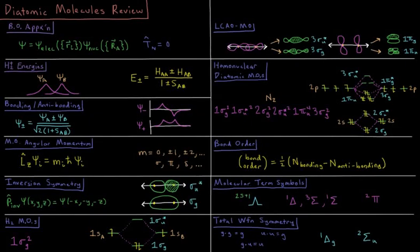This video is a review of the diatomic molecules chapter in the quantum chemistry and spectroscopy playlist. We start off with the Born-Oppenheimer approximation, where the kinetic energy of our nuclei is going to be zero.